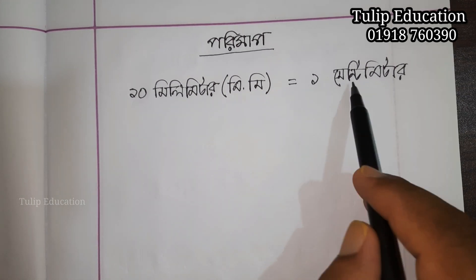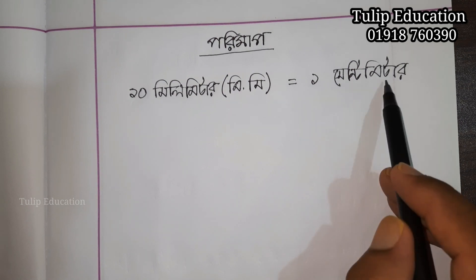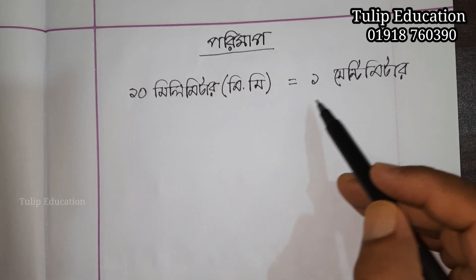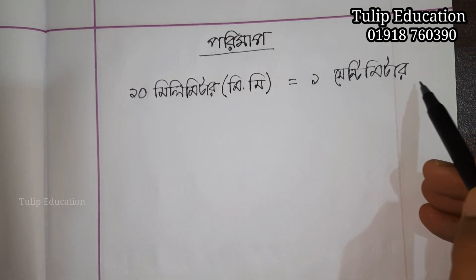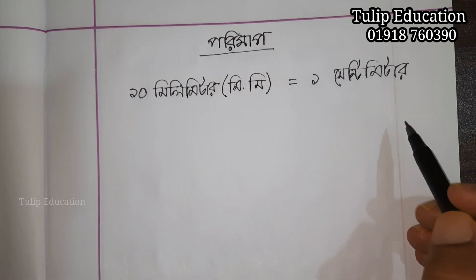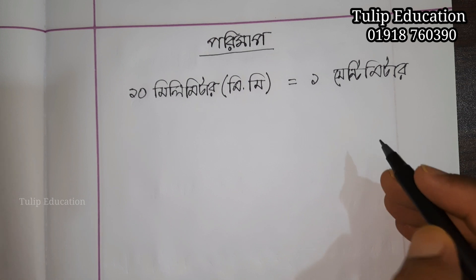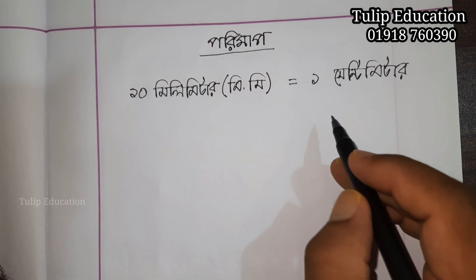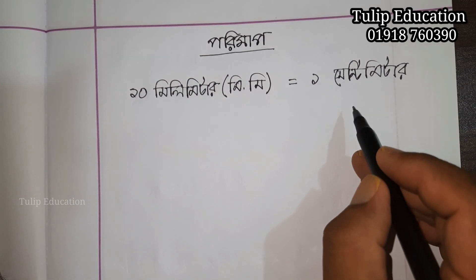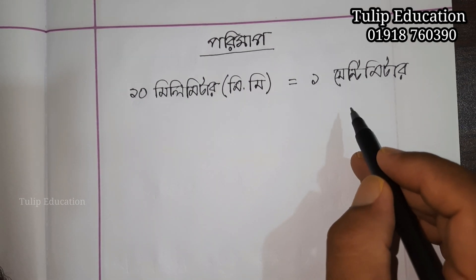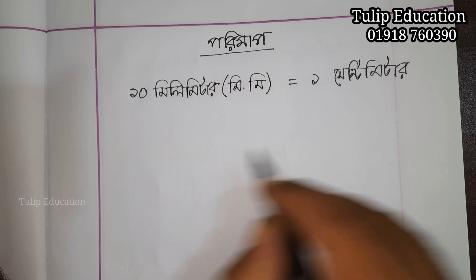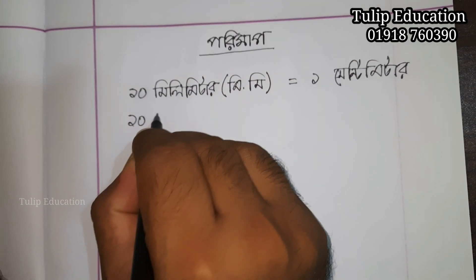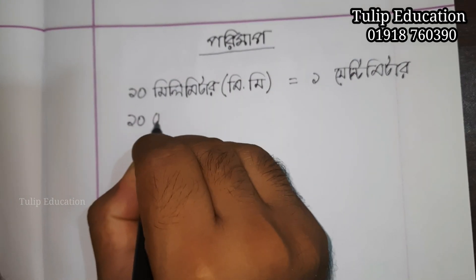How many times is 1 mm in 1 cm? So we have 10 mm to 1 cm. But we also have 10 cm with 10 cm — that gives us 10 cm.